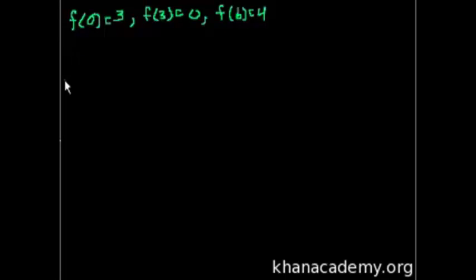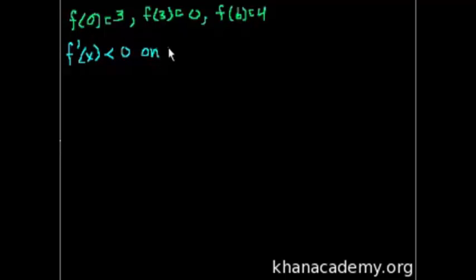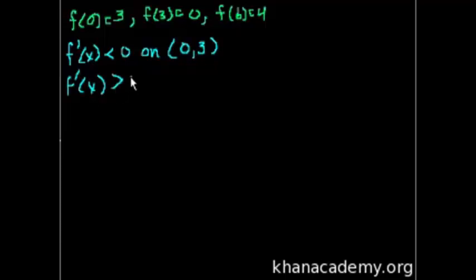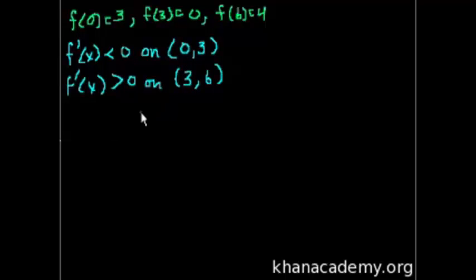Let me write all the derivative information. They tell us that f prime - the derivative of x - is less than 0 on the open interval (0, 3), so not including 0 and 3. And they also tell us that the derivative is greater than 0 on the open interval from (3, 6). So we can already guess that the derivative must be 0 at 3. That's the information that tells us about the first derivative.